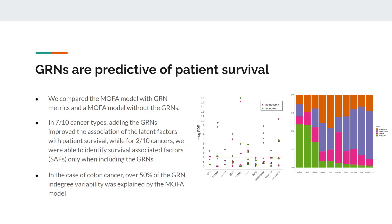We also looked at the proportion of variance explained by the model for each omic, and we found that in colon cancer more than half of the variability in the networks was actually captured by the model — so the networks are informing the model quite a lot.